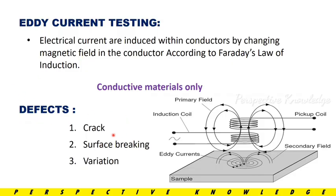What are the defects? The cracks, the surface breaking, and the variation. The surface variation — we can use the Eddy Current Test for these. The Eddy Current Test concept involves a coil wind-up with a primary and secondary coil. In the coil, we generate electric power and generate a magnetic field. That magnetic field is the primary field and secondary field, and we produce the magnetic field.